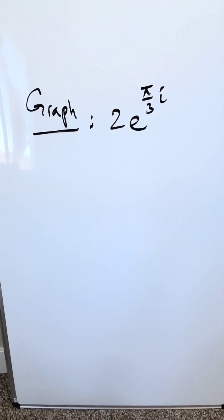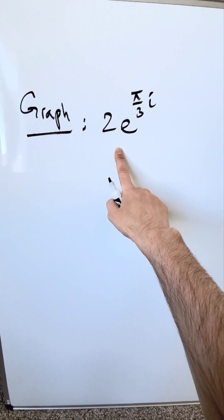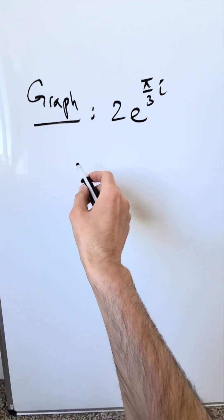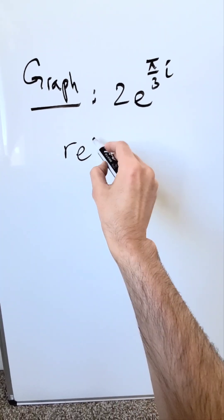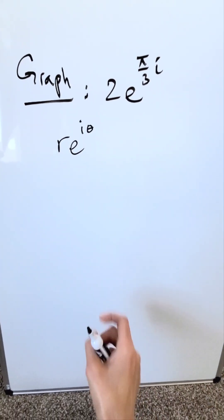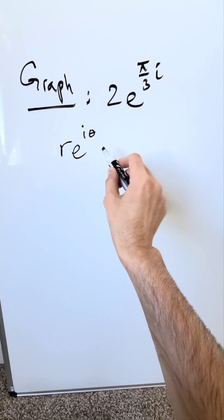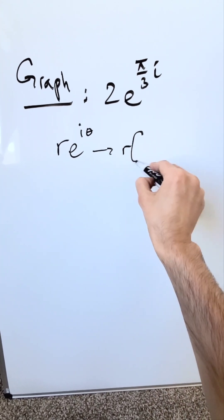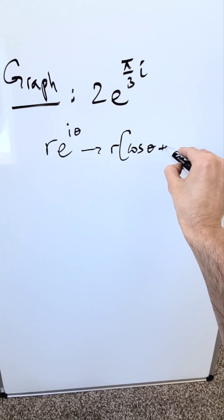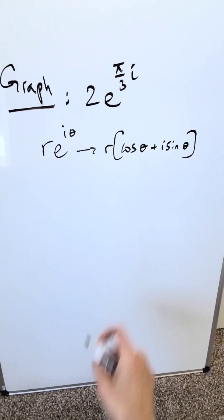We will look at an interesting graph. We are doing 2e^(πi/3). In essence, what are we trying to graph? r·e^(iθ). You are looking at this by means of Euler's identity, and it would be equal to r times cosine θ plus i sine θ, and you're applying it.